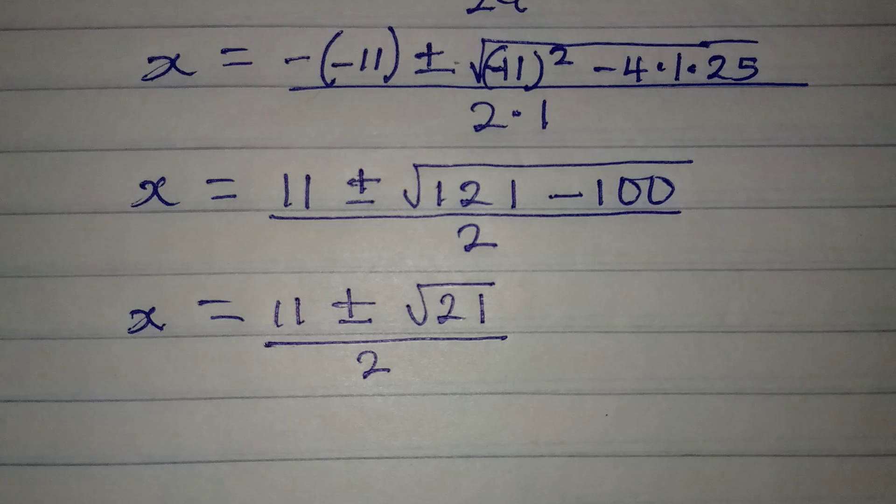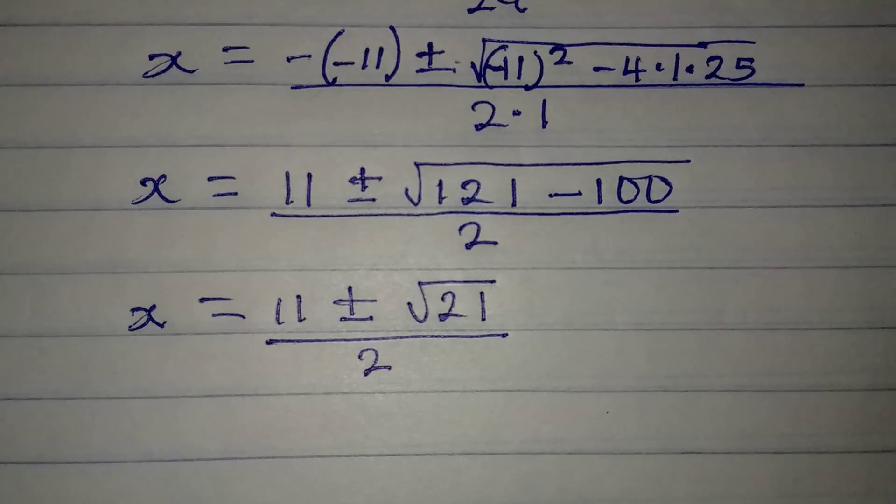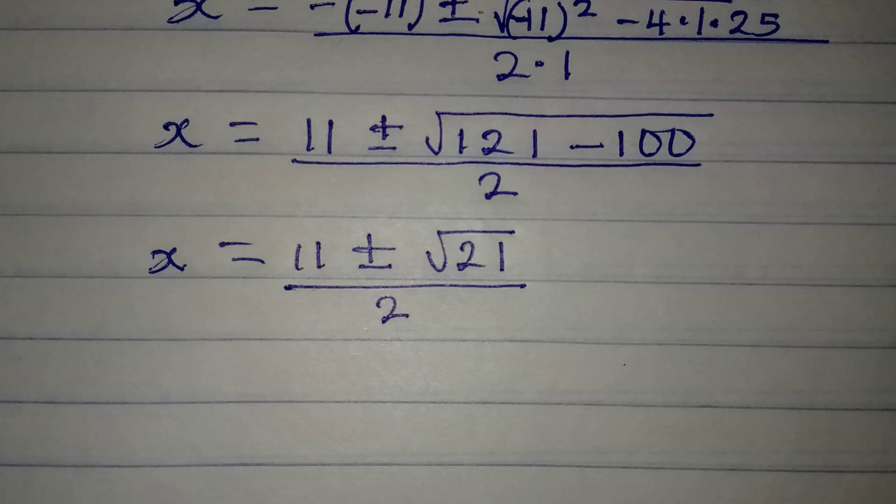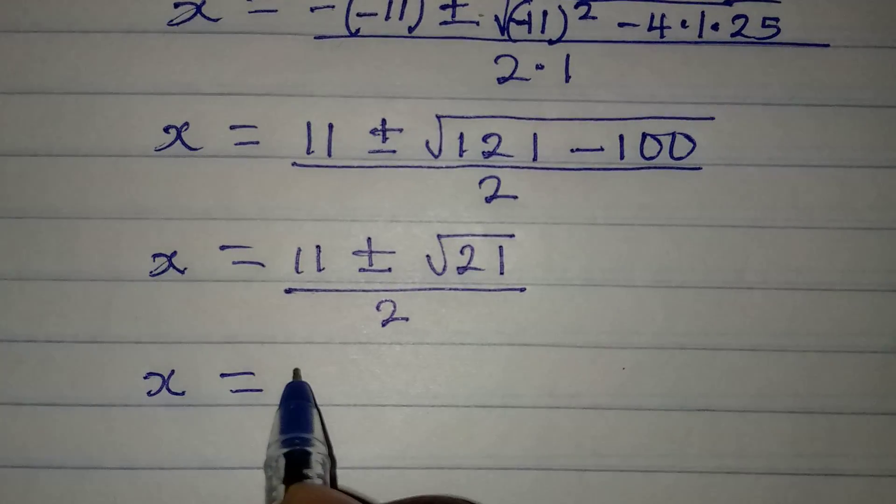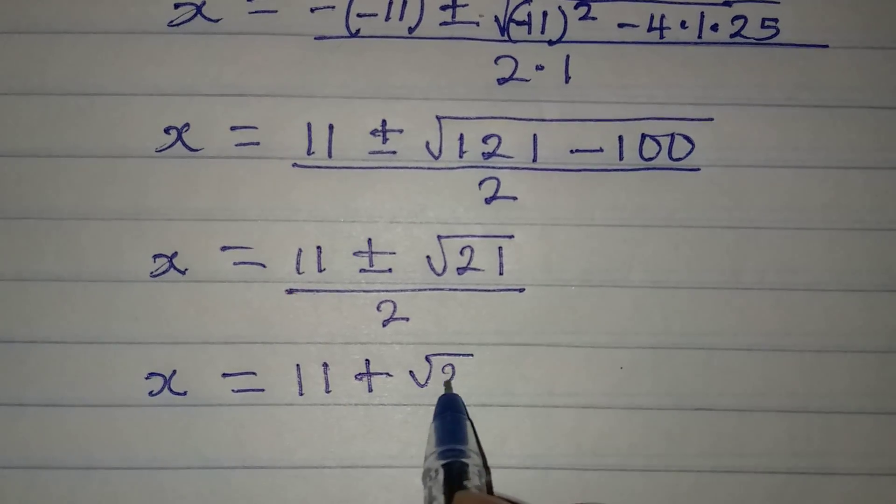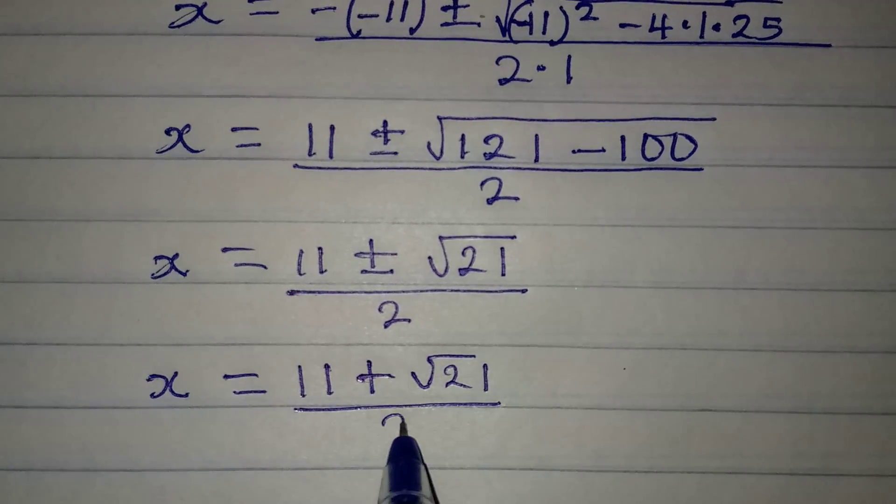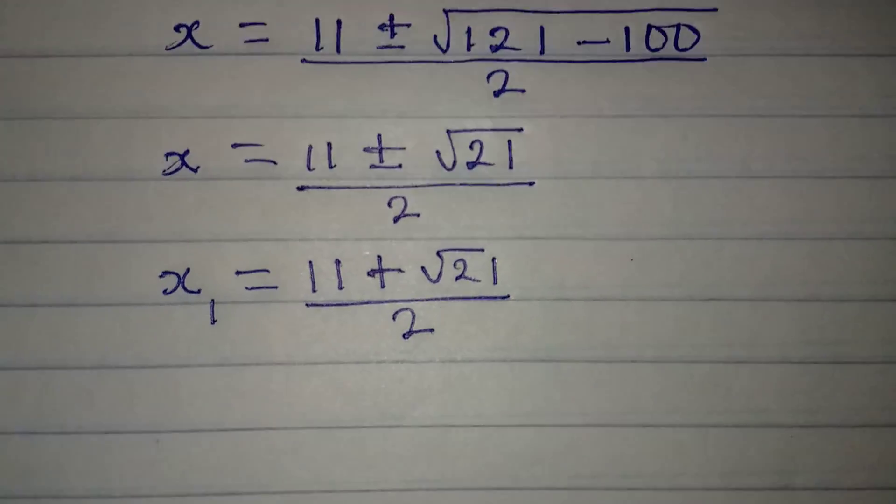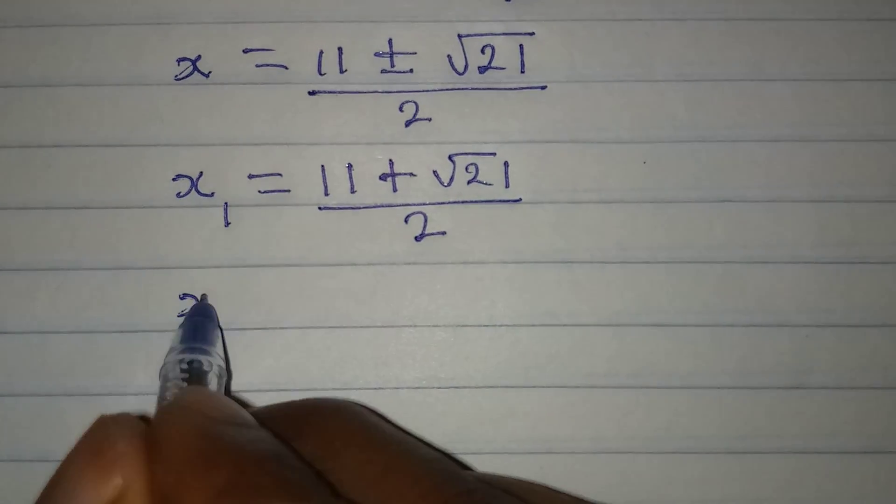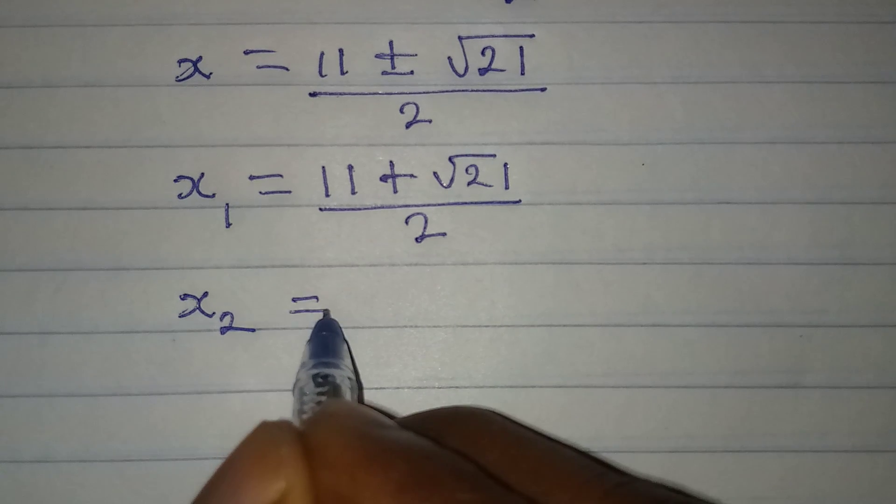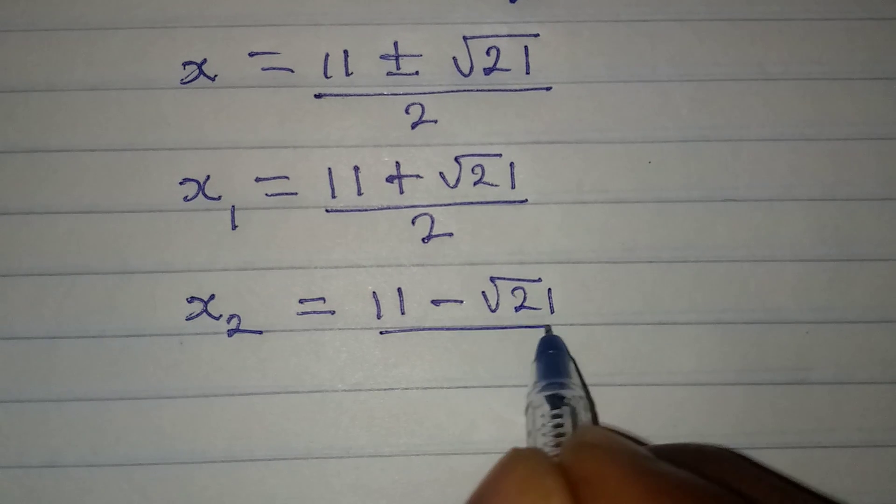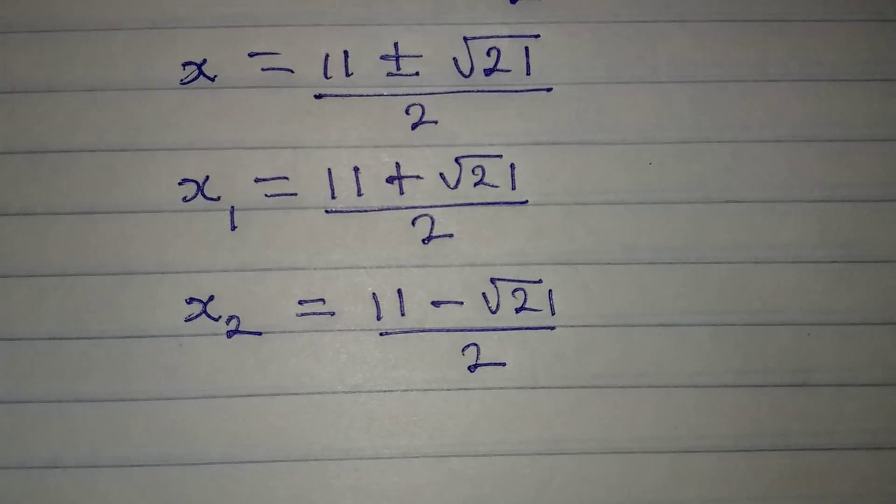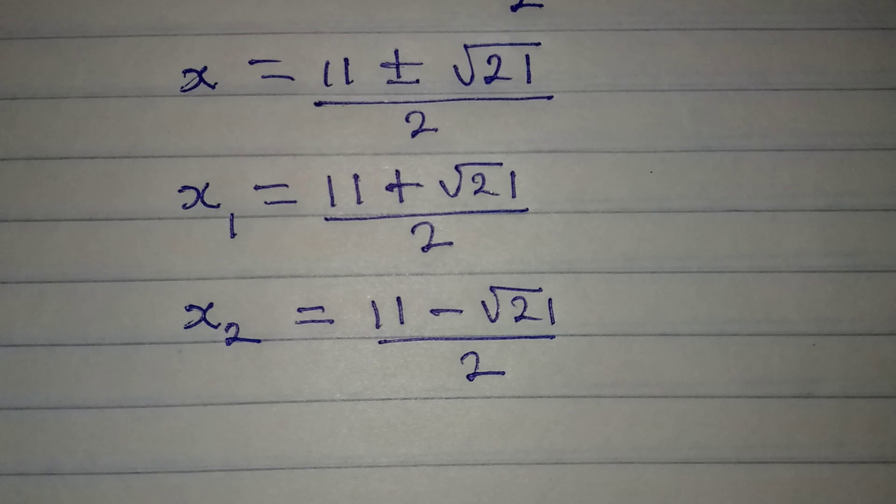So what do I do from here? From here now we can say that our x is equal to 11 plus square root of 21 over 2. Let's call this x1. And then we also have x2, which will be 11 minus square root of 21 over 2. And we can equally have this in decimal.